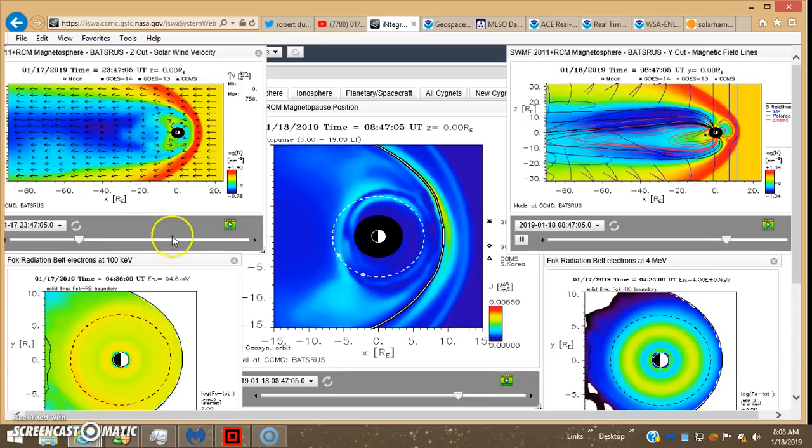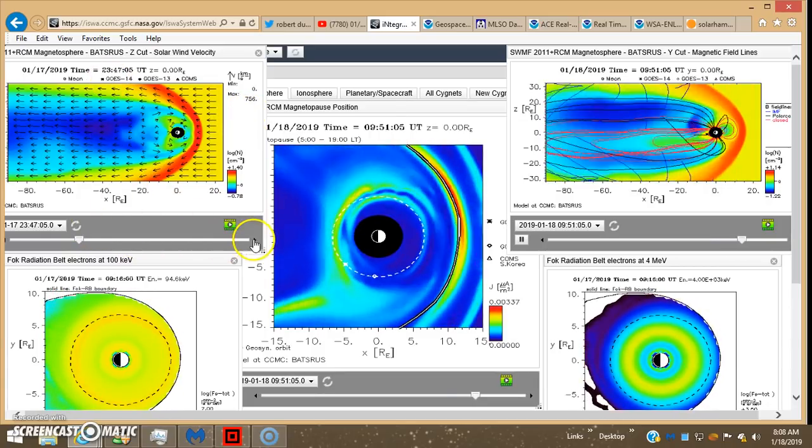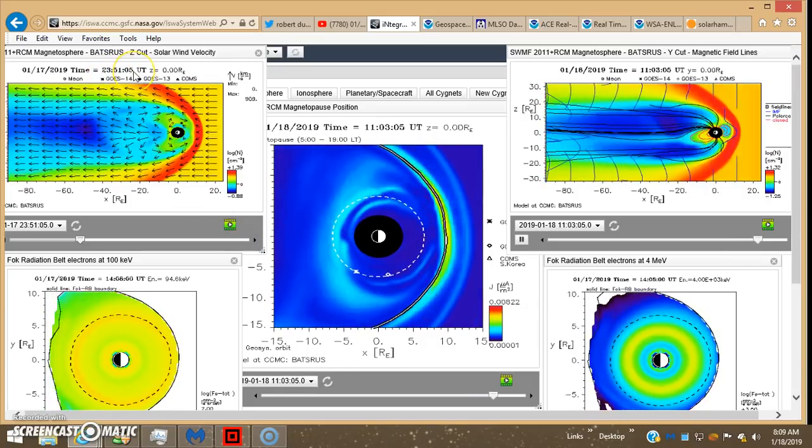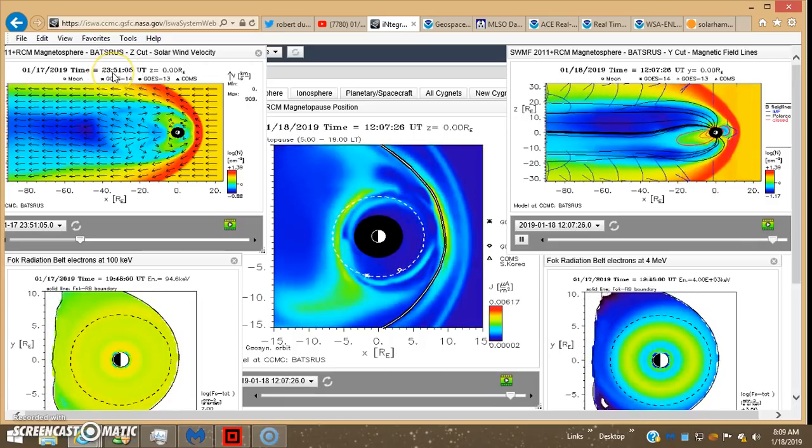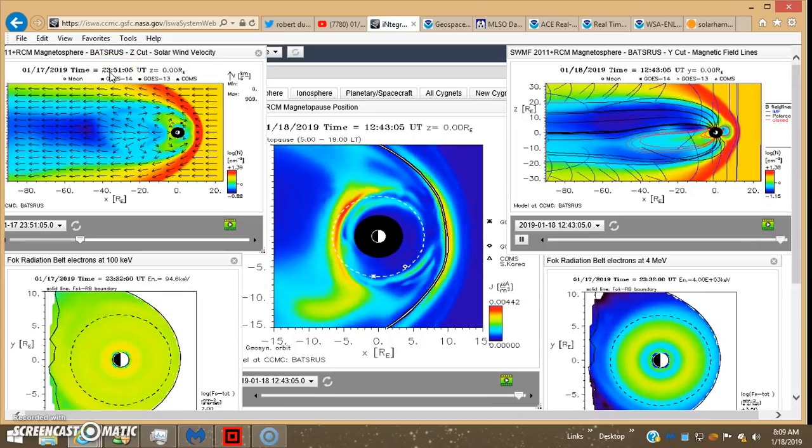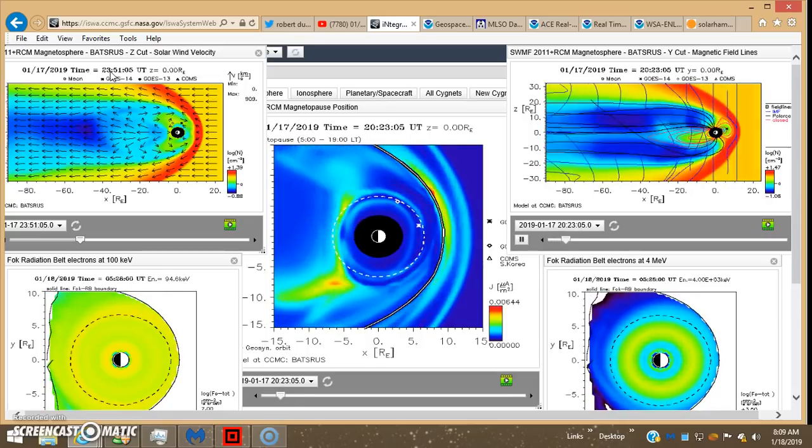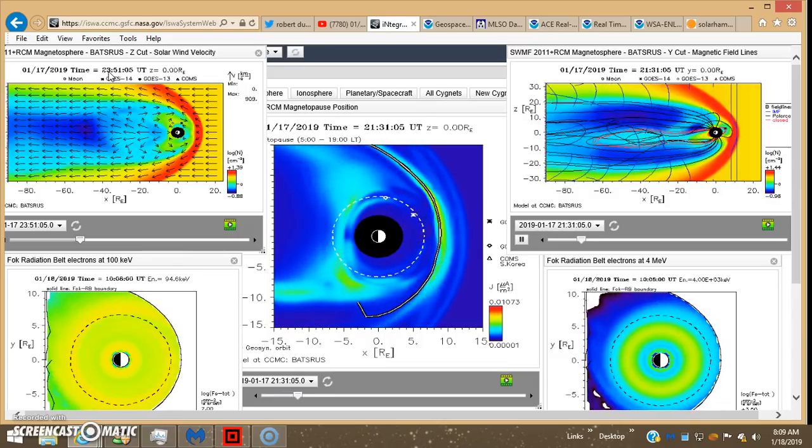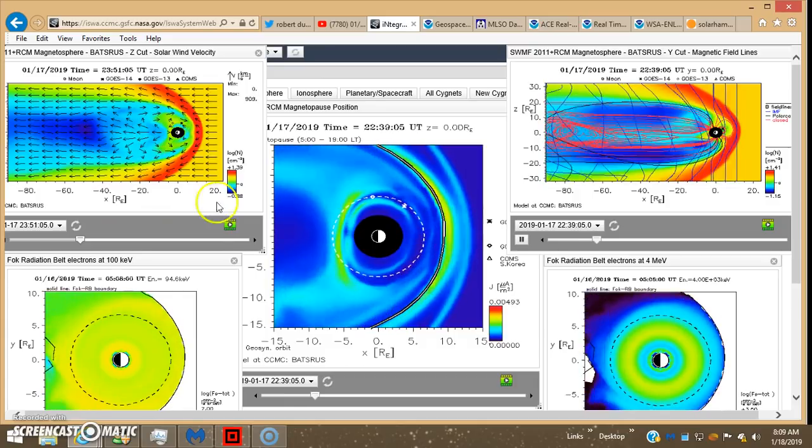Anyway, last night we had another high-speed solar wind event, only lasted about an hour and a half at 2351 UTC, which is about 6:51 Eastern Standard Time, went up to 909.